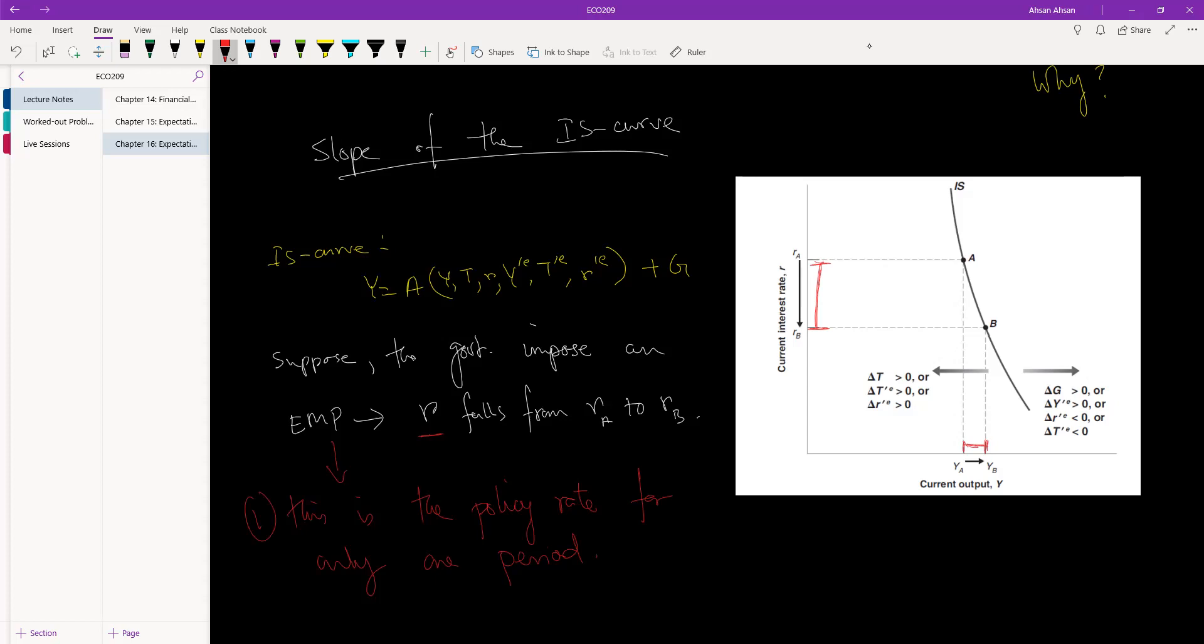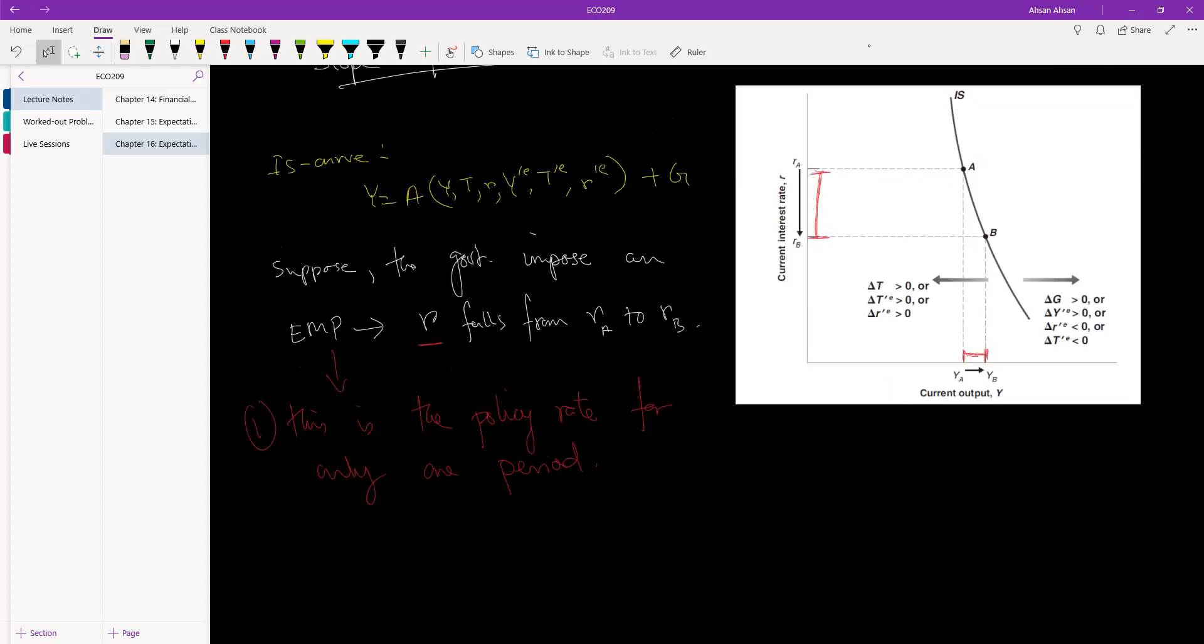Okay, so this is the first point: the government can only change the policy rate of this period, but not future periods. Second point: remember the multiplier effect.